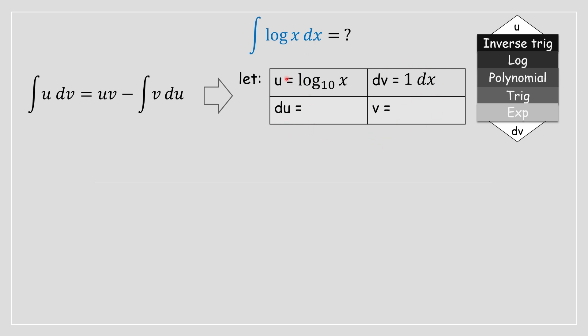We start on the left hand side. The derivative of log base 10 of x yields du which equals 1 divided by x ln 10 dx. On the right hand side we take an integral on both sides of this equation.